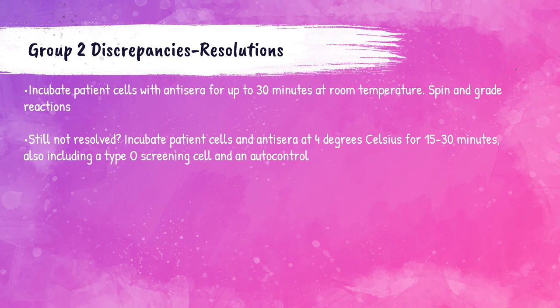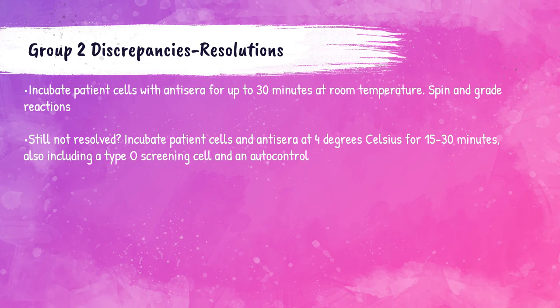To resolve group 2 discrepancies, the patient's red blood cell suspension and antisera should be incubated for 15 to 30 minutes at room temperature, spun, and the reaction re-graded. If still unresolved, incubate with patient serum at 4°C for 15 to 30 minutes. An auto control and an O cell control must be incubated alongside to test for cold agglutinins and confirm that agglutination is truly antigen-antibody driven.